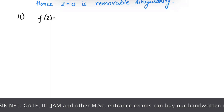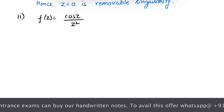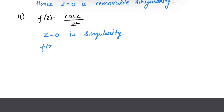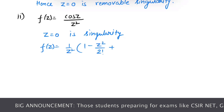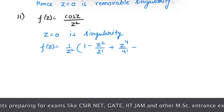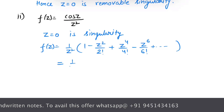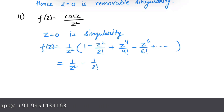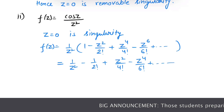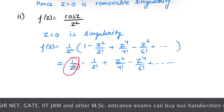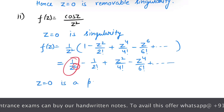Next example: f of z equals to cos(z) over z squared, where z equals to 0 is the singularity. Writing the expansion: f of z equals 1 over z squared times the expansion of cos(z), which is 1 minus z squared over factorial 2 plus z to the power 4 over factorial 4 minus z to the power 6 over factorial 6 and so on. Here we have negative powers of z, with the highest negative power being minus 2. Hence, z equals to 0 is a pole of order 2.